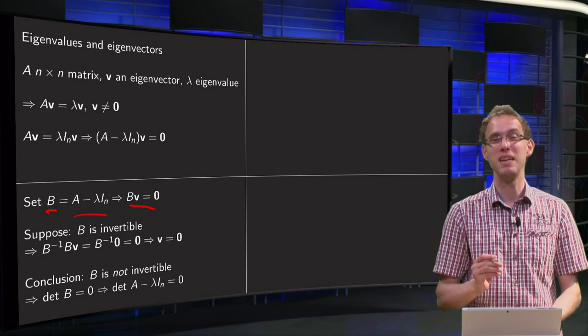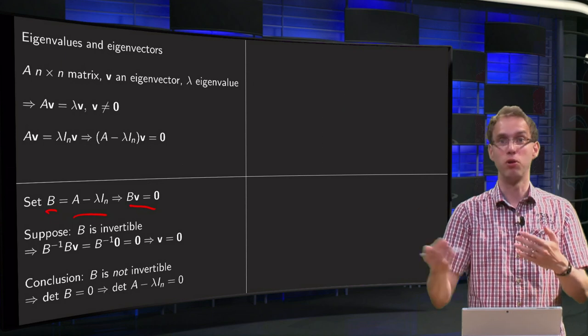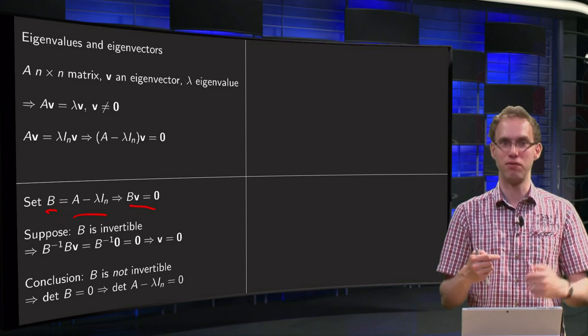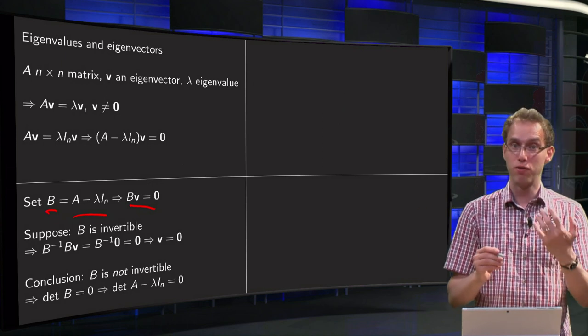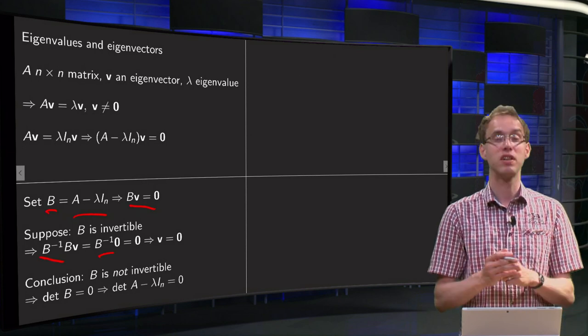Now suppose this matrix B is invertible. Then I have an inverse, B inverse, and then I can put it to the left on both sides of the equation. So we get B inverse times B times V equals B inverse times zero vector.